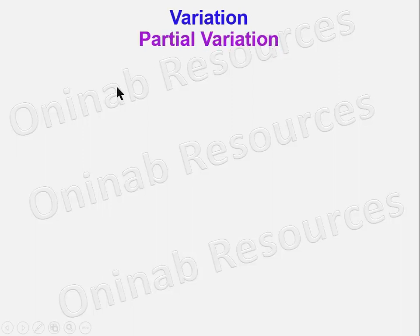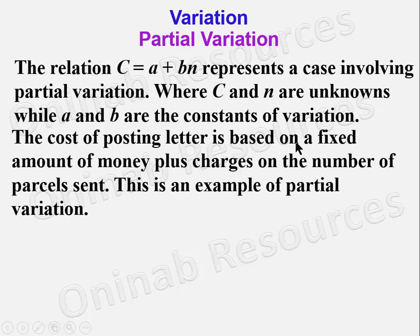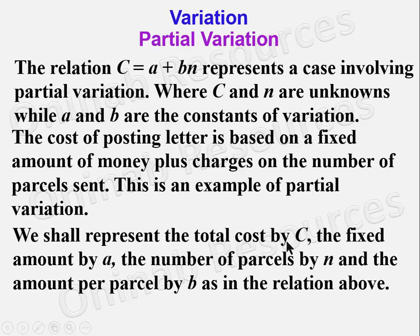In this video we'll be looking at partial variation. The relation c = a + bn represents a case involving partial variation, where c and n are unknowns while a and b are the constants of variation. The cost of posting a letter is based on a fixed amount of money plus charges on the number of parcels — this is an example of partial variation. We represent the cost by c, the fixed amount by a, the number of parcels by n, and the amount per parcel by b, as in the relation above.